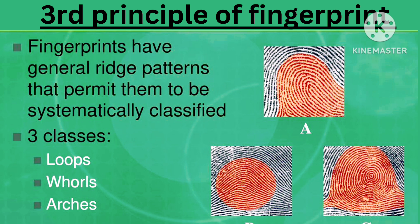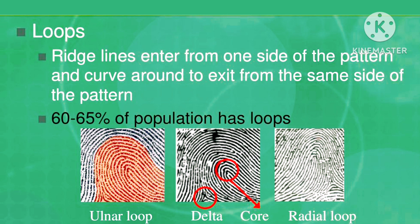The third principle of fingerprint is that fingerprints have a general ridge pattern that permits them to be systematically classified into three classes: Loops, Whorls, and Arches. Loops: ridge lines enter from one side of the pattern and curve around to exit from the same side. 60 to 65% of the population has loops.